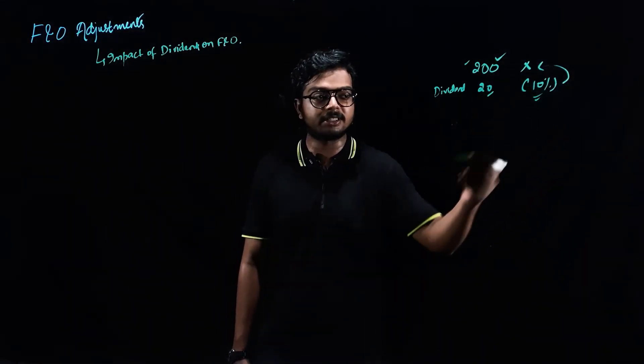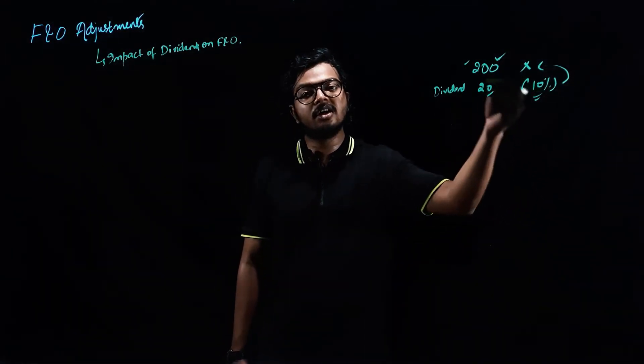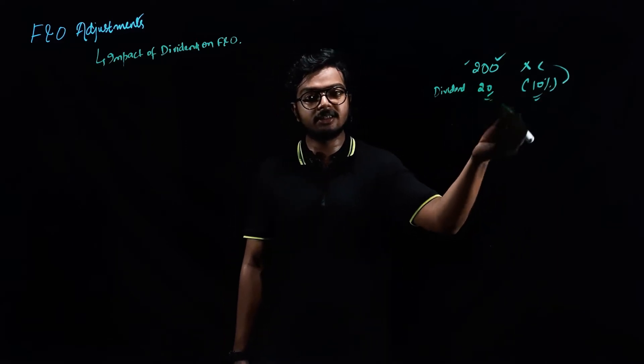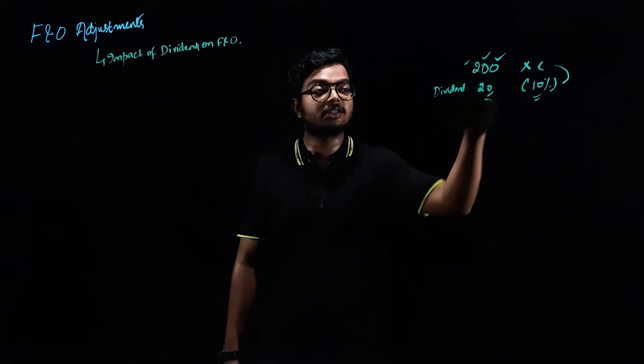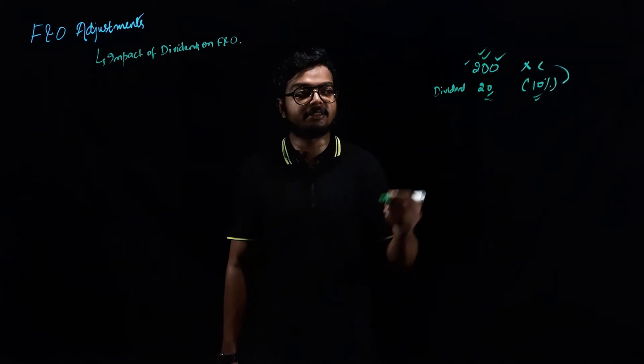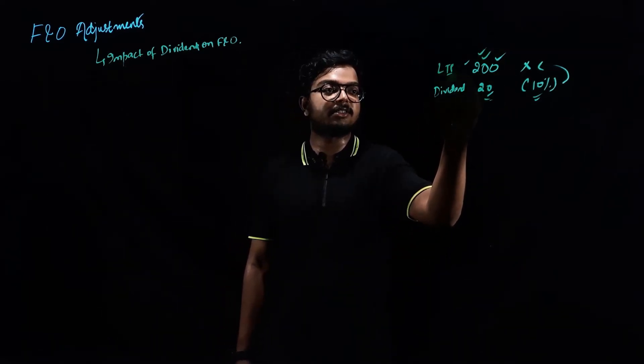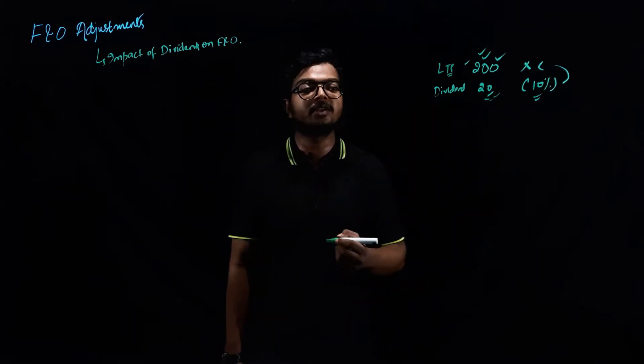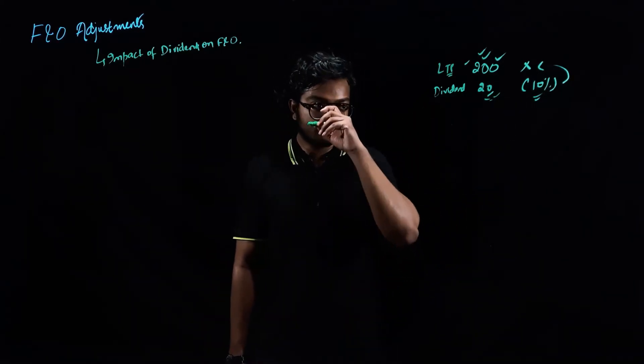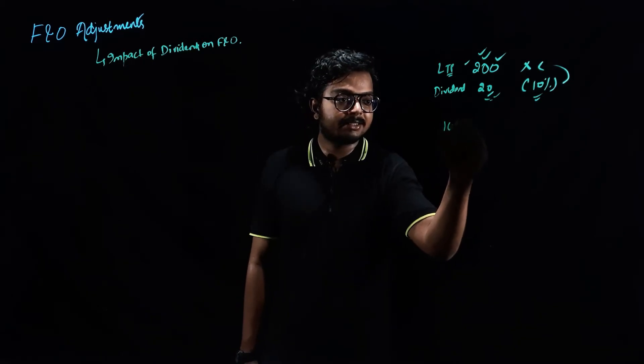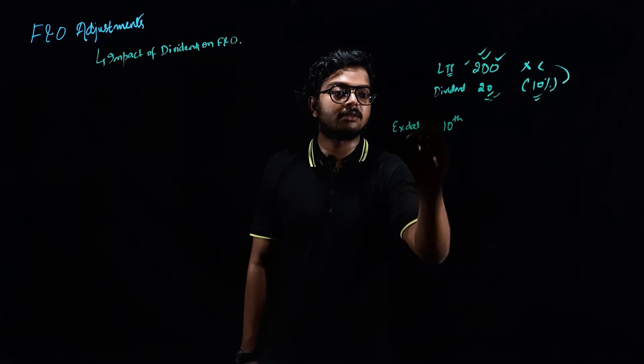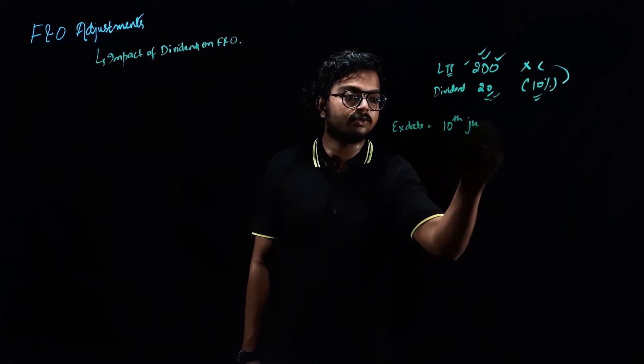Generally we know that dividend is computed on the face value, but here I'm just assuming it is compared with the strike price or current LTP. This is the closing price. The dividend declared was 20 rupees, so it is 10%. Now the dividend date is X dividend date, say for example, 10th of July.